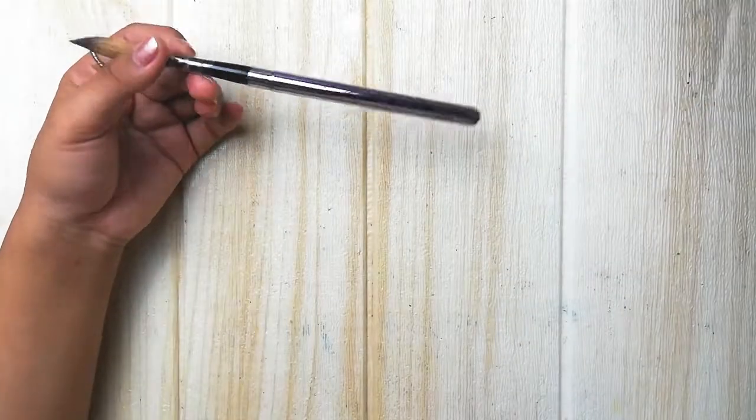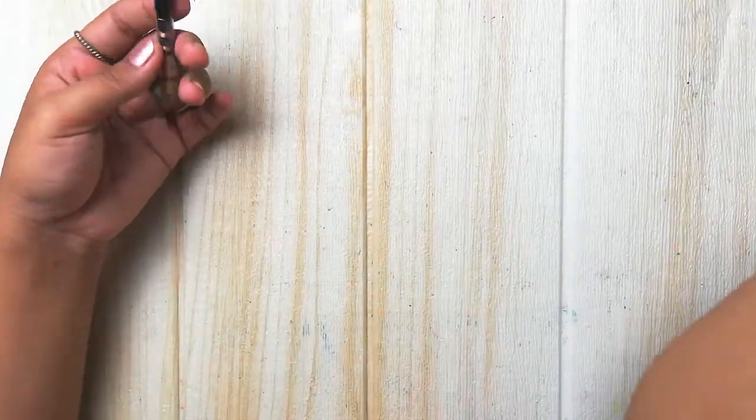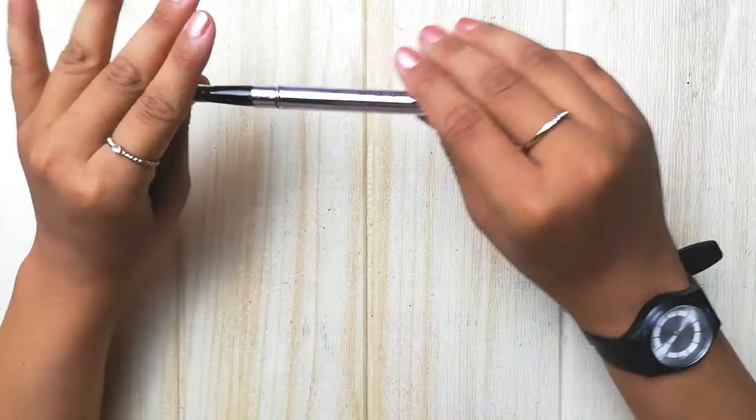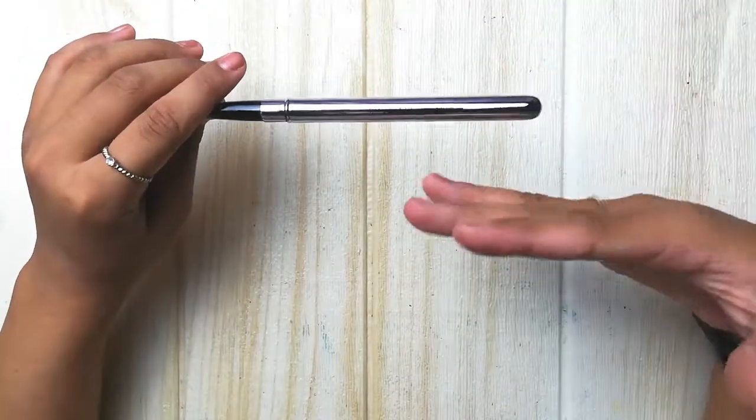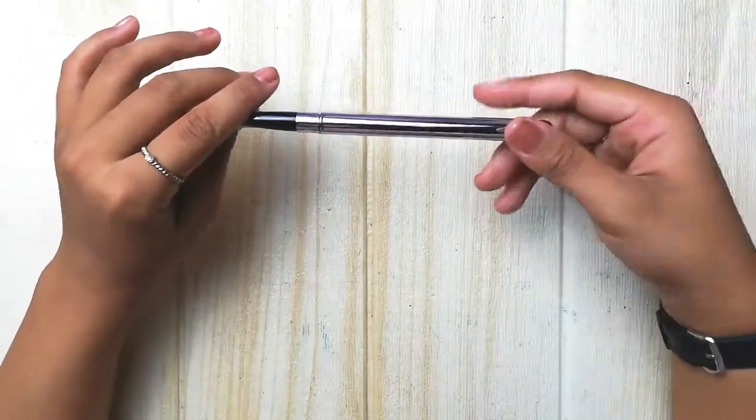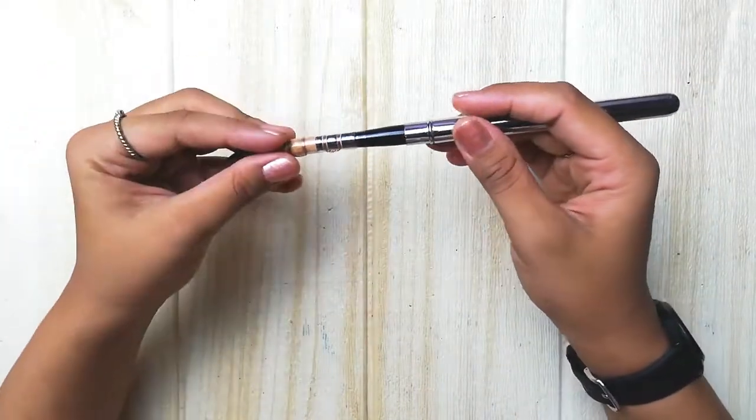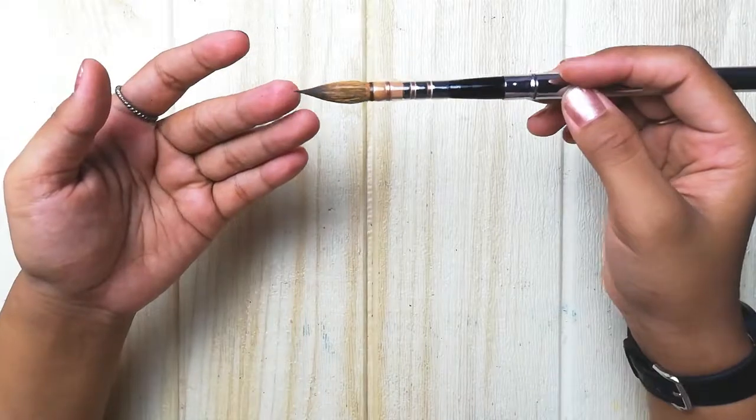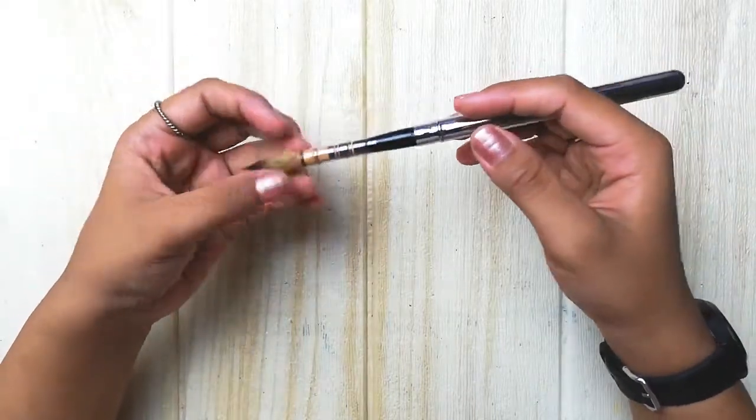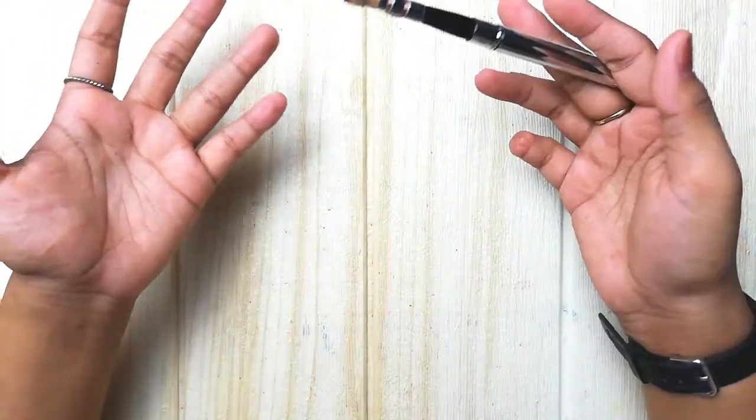So, onto the review. On first glance, if you just look at the handle, it looks like the Escoda Optimo or Escoda Prado or Princeton Aqua Elite, but the tip looks completely different from them. And I personally think that this is more like a mop brush instead of a round brush.